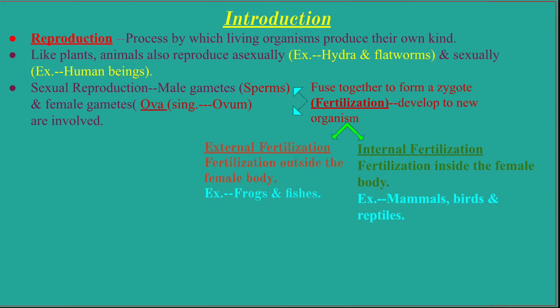What is reproduction? It is a process by which living organisms produce their own kind. Plants and animals also reproduce both asexually and sexually. Animals that reproduce asexually include hydra and flatworms — these are primitive animals. Animals such as human beings reproduce sexually, and in this chapter we will discuss sexual reproduction in human beings.